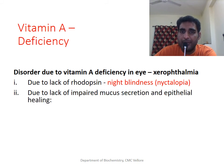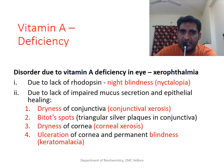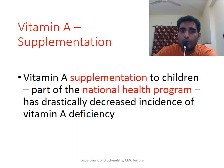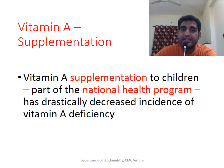Due to its role in epithelium, when Vitamin A is deficient, tear secretion and the cornea and conjunctiva are affected, leading to dryness, ulceration, and eventually permanent blindness. Vitamin A supplementation is also part of a national health program and has drastically decreased the incidence of xerophthalmia. That brings us to the end — thanks for watching.